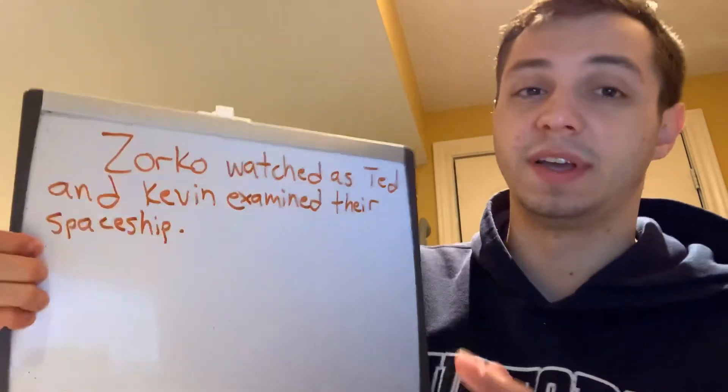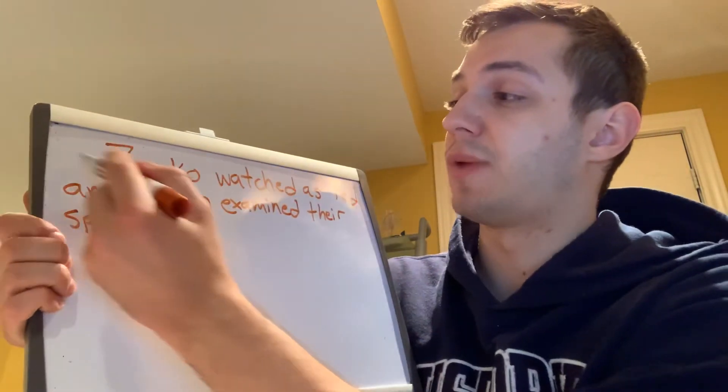We're going to write the first sentence that's given to us. Remember, when we're starting a paragraph, we need to indent. So our first sentence will be: Zorko watched as Ted and Kevin examined their spaceship. This first sentence for the first half of our story is given to us. Notice I remember to indent.